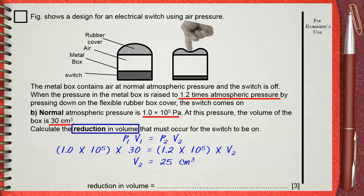So, let's subtract the initial volume minus the final volume, which is 30 minus 25, this gives 5 centimeters cube. This is the reduction in volume of air that makes the switch on. Let's stop working.